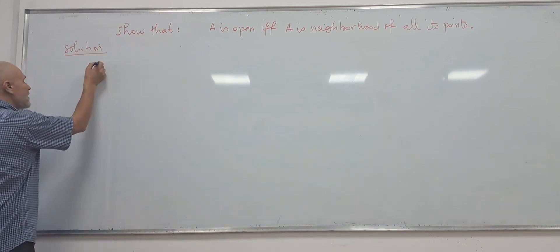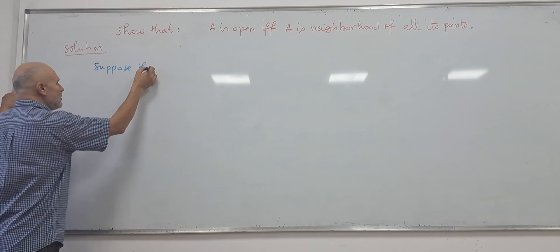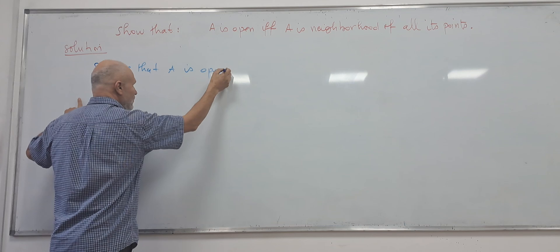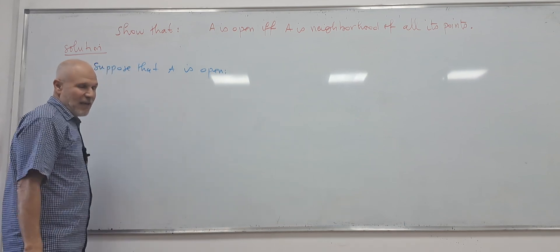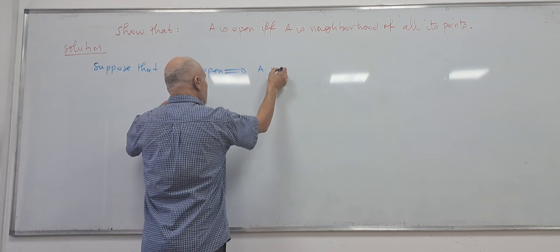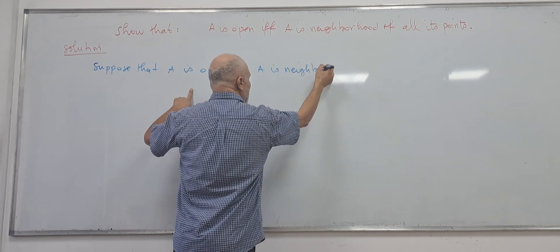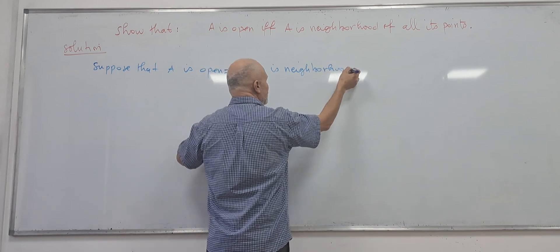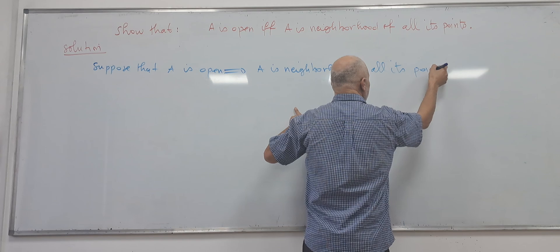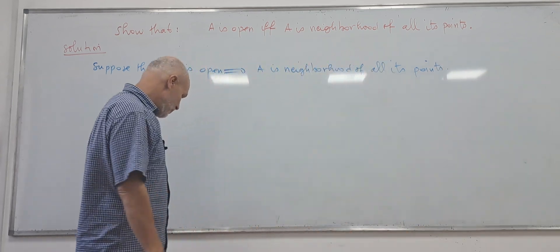First, suppose that A is open. If A is open, this implies that A is neighborhood of all its points by definition.